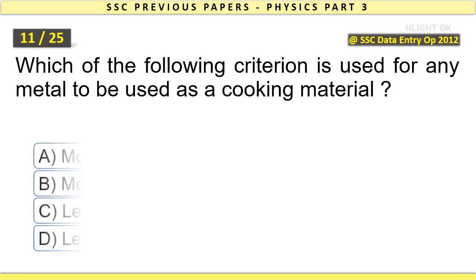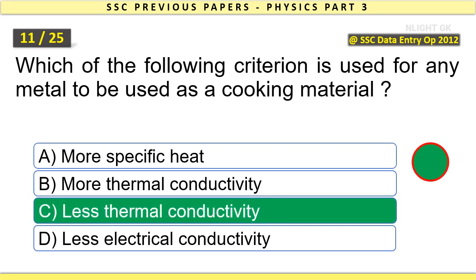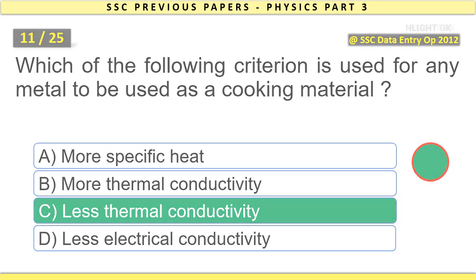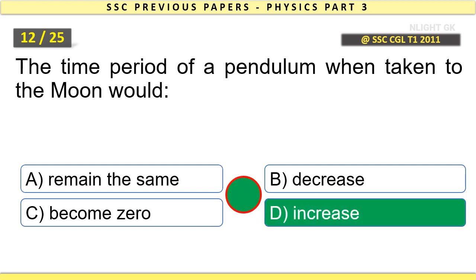Which of the following criterion is used for any metal to be used as a cooking material? Less thermal conductivity. The time period of a pendulum when taken to the moon would increase.